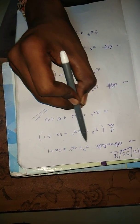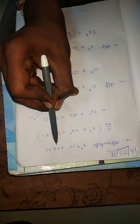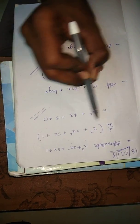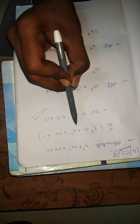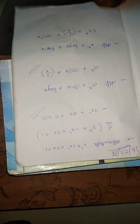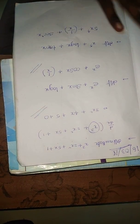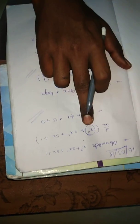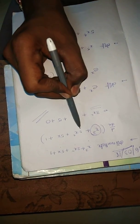Differentiate x³ + 2x² + 5x + 1. d/dx of x³ + 2x² + 5x + 1. For x³, we use the formula d/dx of xⁿ = n·xⁿ⁻¹. So x³ gives 3x². Then 2 times x² gives 2 into 2x, which is 4x.